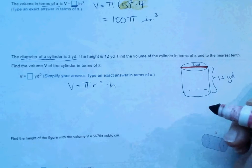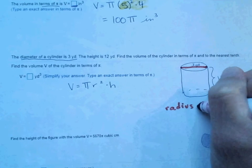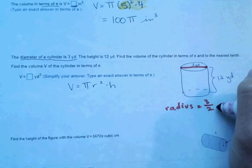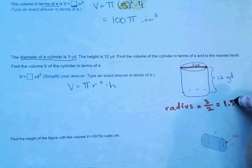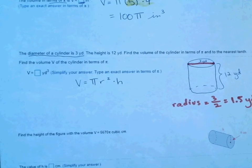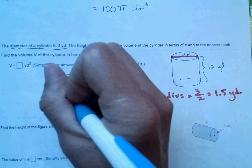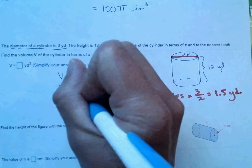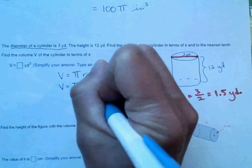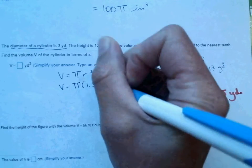So to get the radius, I have to take 3 and cut it in half. So that gives me 1.5 yards for the radius. So 3 divided by 2 is 1.5, so my radius is 1.5. So I got volume equals pi times 1.5 squared times our height, and our height is 12.